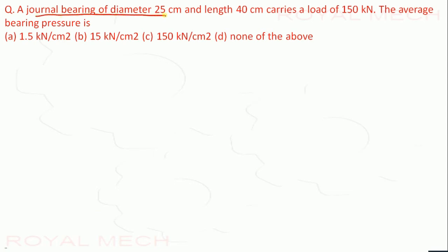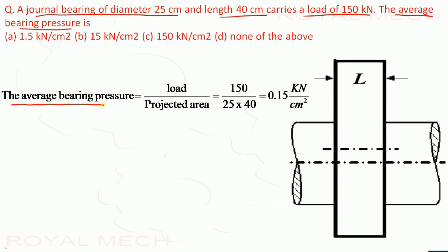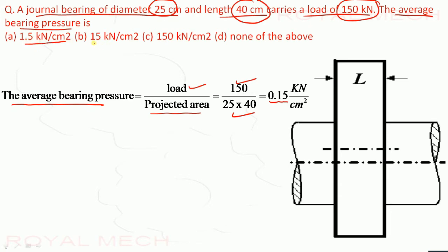A journal bearing of diameter 25 cm and length 40 cm carries a load of 150 kN. The average bearing pressure equals load divided by projected area, which is 150 kN divided by (25 × 40), giving 0.15 kN/cm². Since none of the given options match 0.15 kN/cm², none of the above is the correct option.